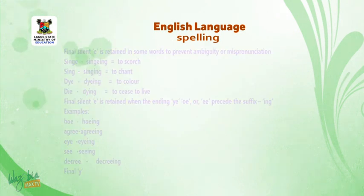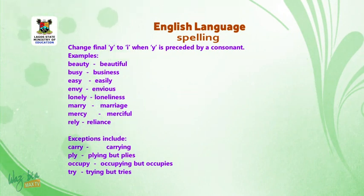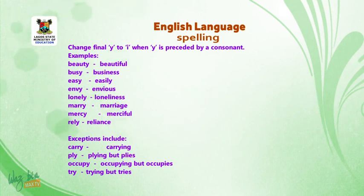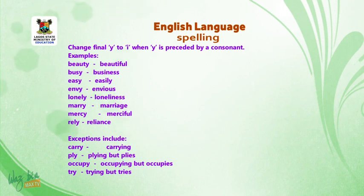Final Y: change final Y to I when Y is preceded by a consonant. Examples: beauty — beautiful, busy — business, easy — easily, envy — envious, lonely — loneliness, marry — marriage, mercy — merciful.